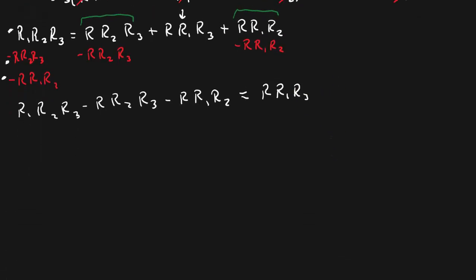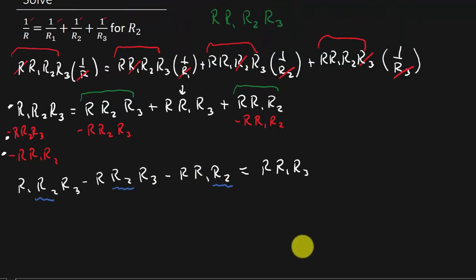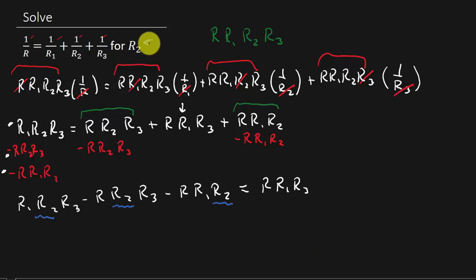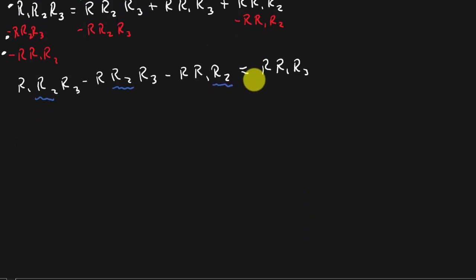And so if you look now I have a common factor of R2. Because see, that's what we're solving for. We're solving for R2. So I'm going to factor out that R2. So that's R2 times R1 times R3 minus R times R3 minus R times R1 equals R times R1 times R3.